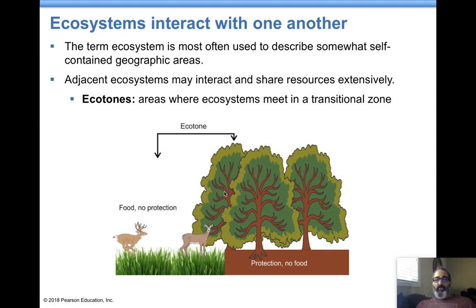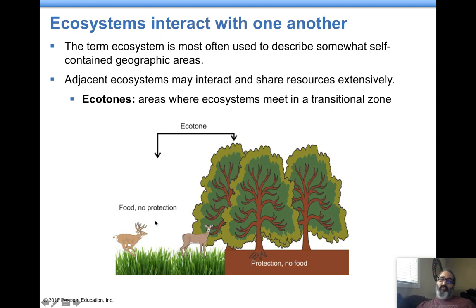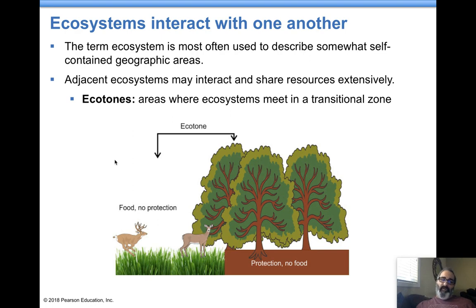Ecotone is just a term for the in-between area where two ecosystems or biomes border each other — for example, where a forest and a grassland meet. That transitional area is called an ecotone. Here in San Diego, our biome is chaparral, but we have deserts right next to us, so there are areas that are a little bit of both — those are ecotones.